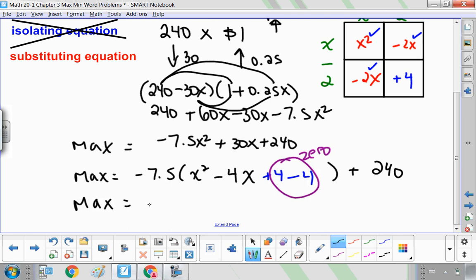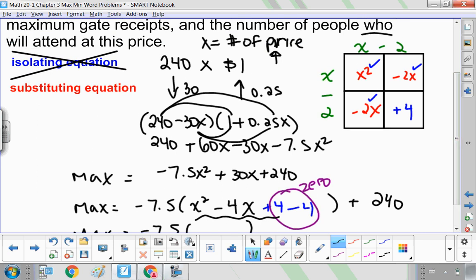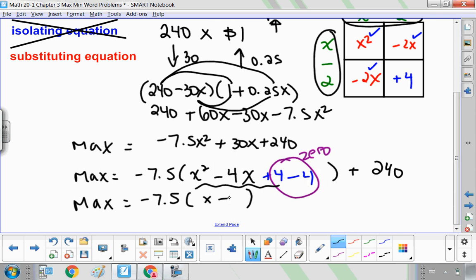So the maximum receipts are going to be negative 7.5 times, let's look at our perfect square trinomial here. Back up to the grid, I know that factors as X minus 2 times X minus 2, or X minus 2 squared.